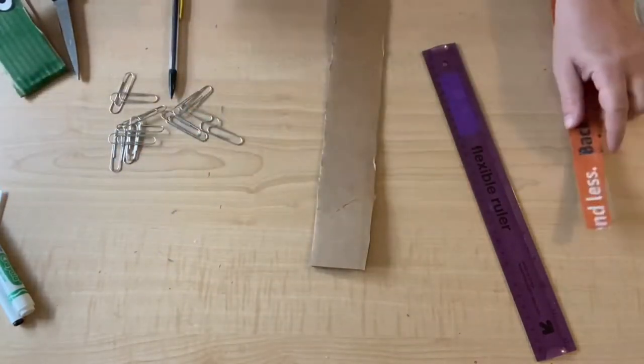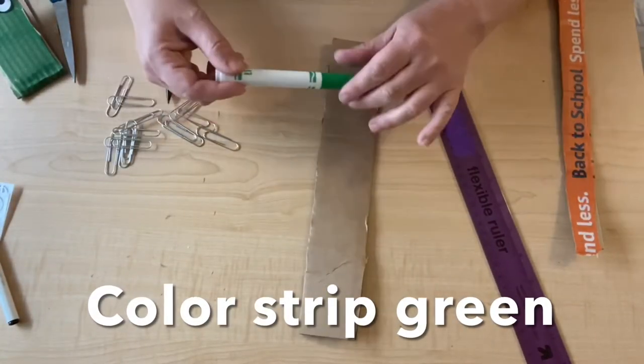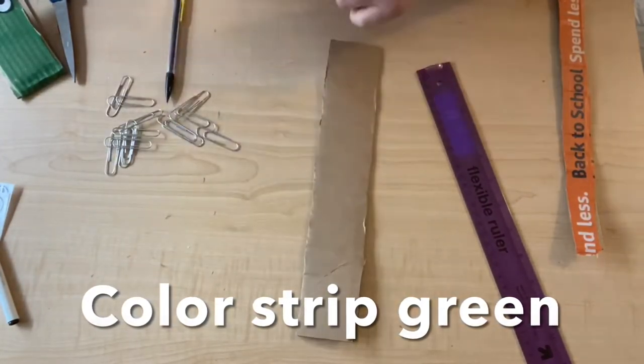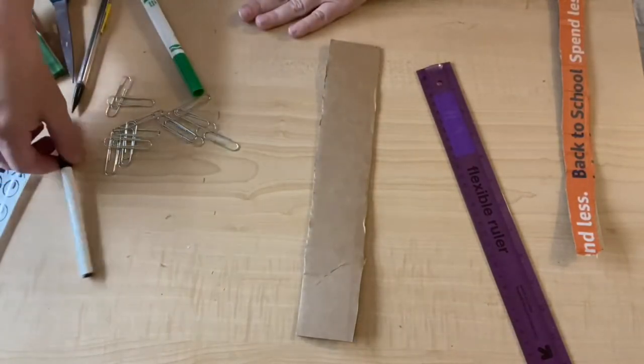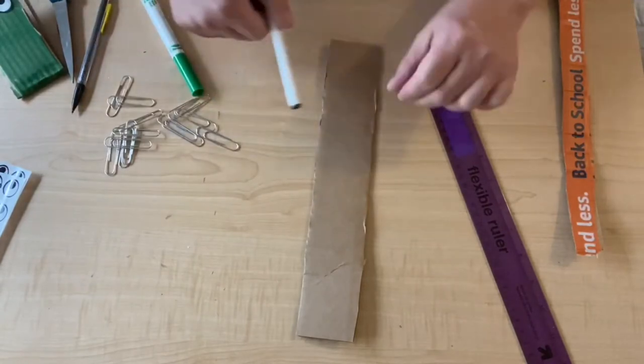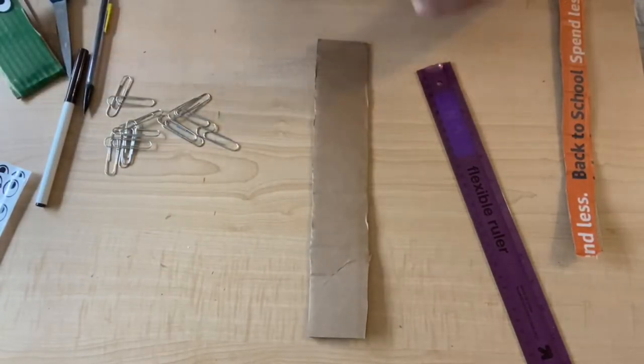So I got that done and now the thing to do is to color your strip. We're going to color it green. If you're going to do your eyes with a marker then you probably want to draw those on first, but because I'm going to use stickers I'm just going to go ahead and color.